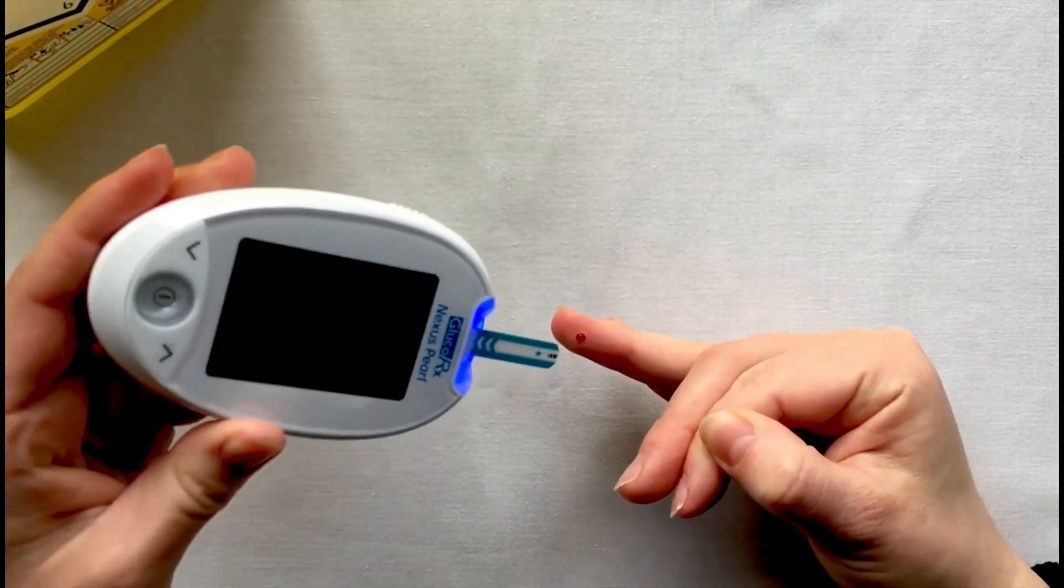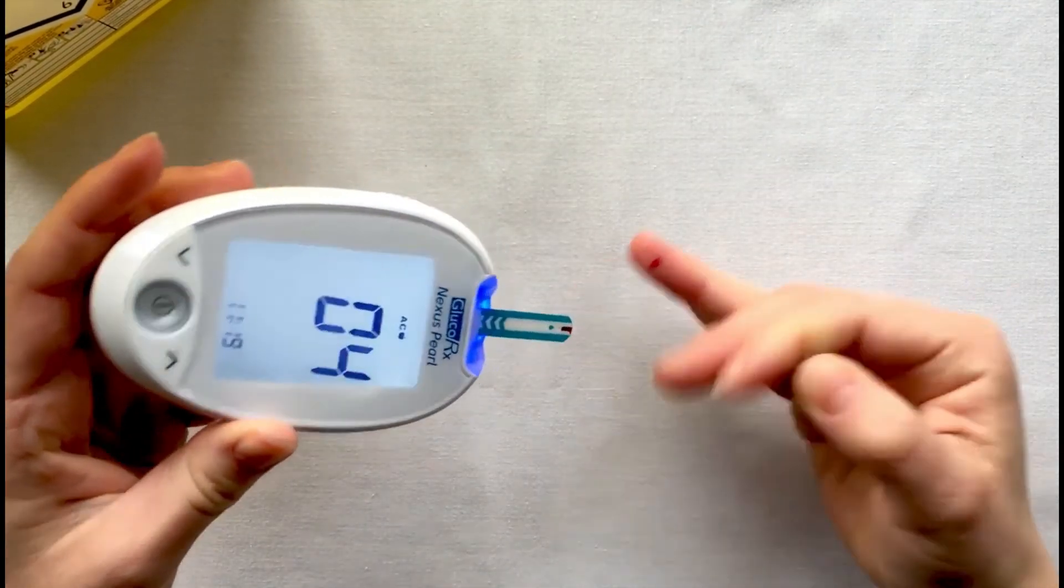Hold the end of your test strip to your finger at a 45 degree angle. Your blood sample should be drawn into the strip.